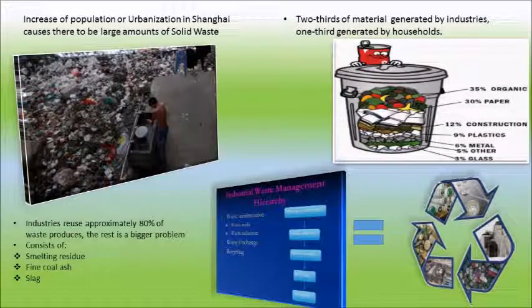Like all mega cities, Shanghai produces a huge amount of solid waste daily. Due to the increase of the population in Shanghai, solid waste management may lack. Two thirds of waste material are generated by industries and one third is released by households. Industries release some of their waste products, but the rest which is not used consists of smelting residue, fire coal ash and slag.